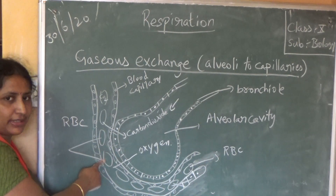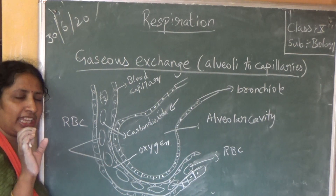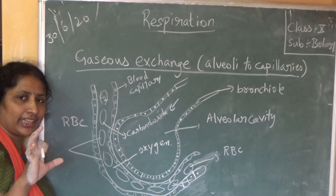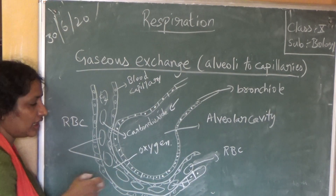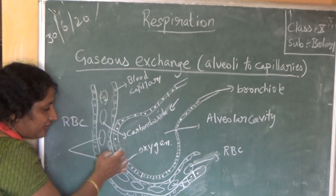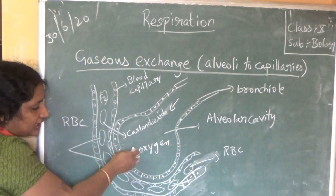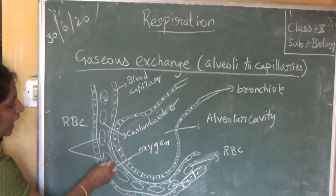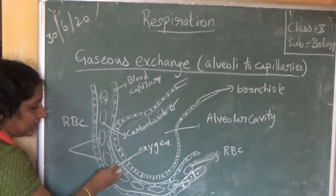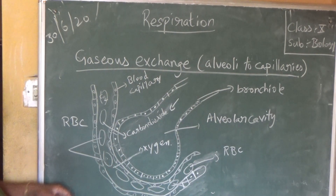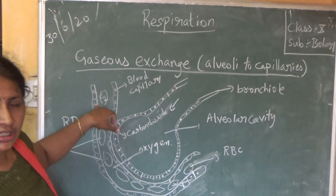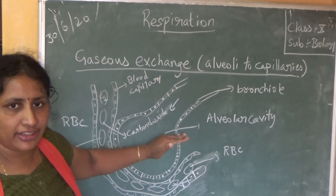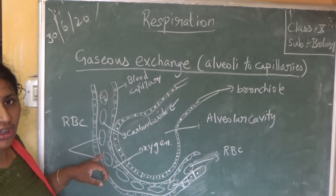Hemoglobin is present in the RBC, and it has very high attraction for oxygen — it likes oxygen very much, so wherever oxygen is available it binds immediately. So the oxygen crosses the single membrane of the alveoli and comes to the RBC in which hemoglobin is present. It reacts with the hemoglobin, and the RBC — which was reddish-brown — now changes to bright red color, because carbon dioxide has been given to the alveoli and oxygen has been taken.